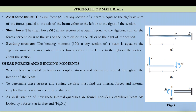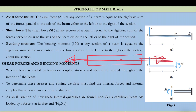The axial force at any section of a beam is equal to the algebraic sum of the forces parallel to the axis of the beam. If forces act along the direction of the member's axis, those are axial forces. At any point, the axial force can be calculated as the algebraic sum of all forces either to the left or right of that section.